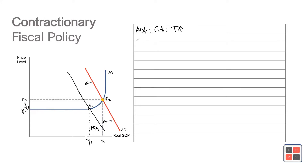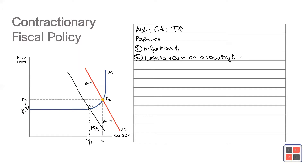What are the positives of contractionary fiscal policy? Number one, inflation may decline, which is a good thing. Secondly, there will be less burden on a country's resources, which is also a good thing. Aggregate demand is decreasing from AD0 to AD1.